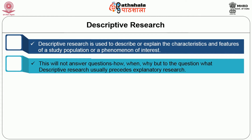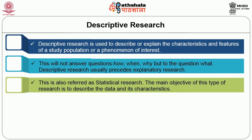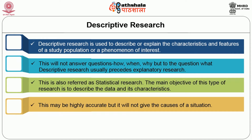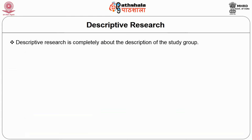Descriptive research usually precedes explanatory research and is also referred to as statistical research. The main objective of this type of research is to describe the data and its characteristics. This may be highly accurate but it will not give the causes of a situation. If a researcher prefers to have a better understanding of a problem, he has to go for descriptive research — that is, analysis of the past as opposed to the future. Descriptive research is completely about the description of the study group.